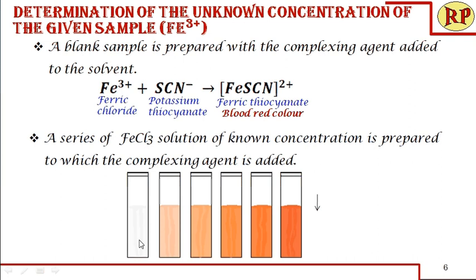We need a blank sample, which contains only the solvent used to prepare the solutions. Here we are using water, so the blank sample is water with no ferric chloride. We then add ferric chloride solution in increasing concentration across the series of cuvettes, and add the same amount of potassium thiocyanate to all cuvettes. As the concentration of ferric chloride increases, the intensity of the colour also increases.